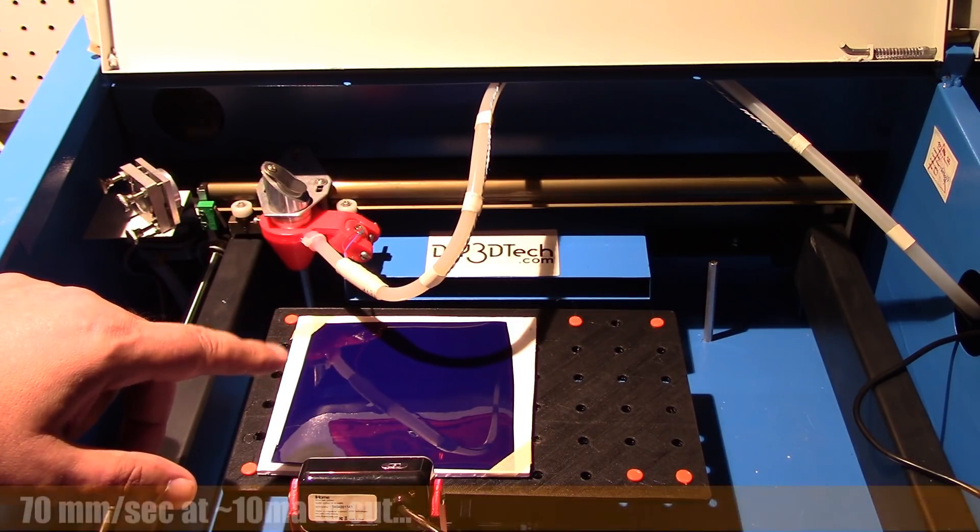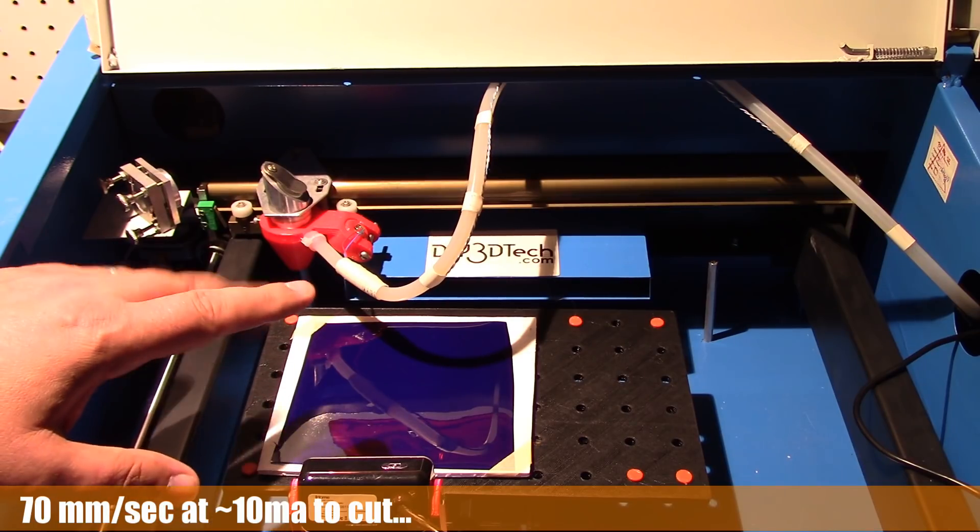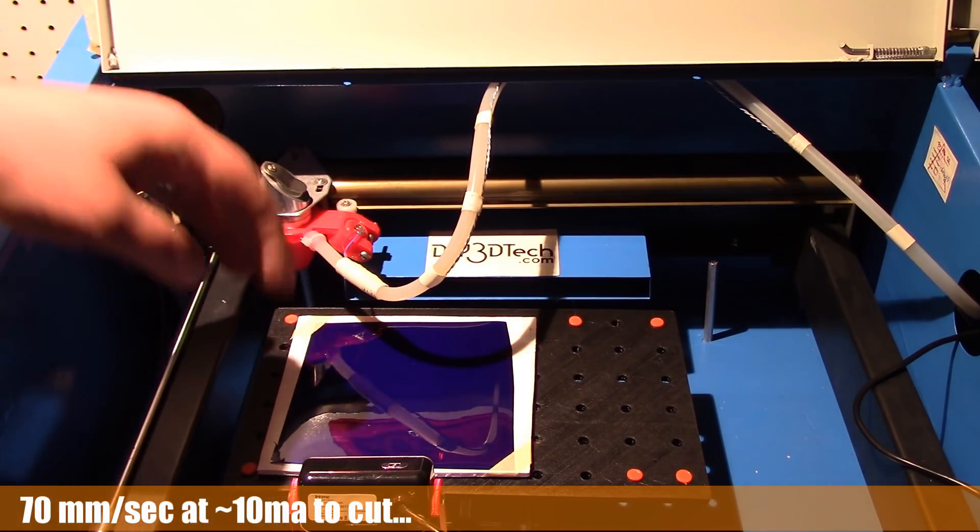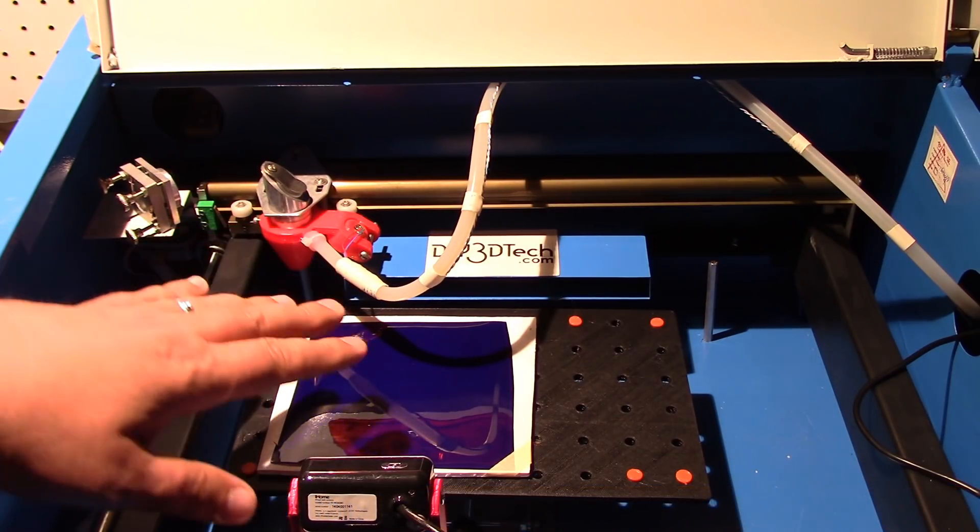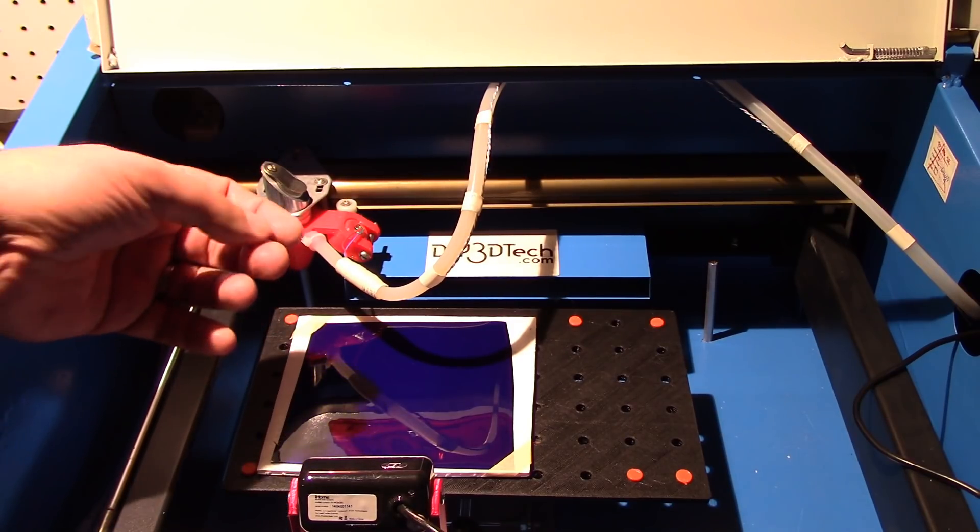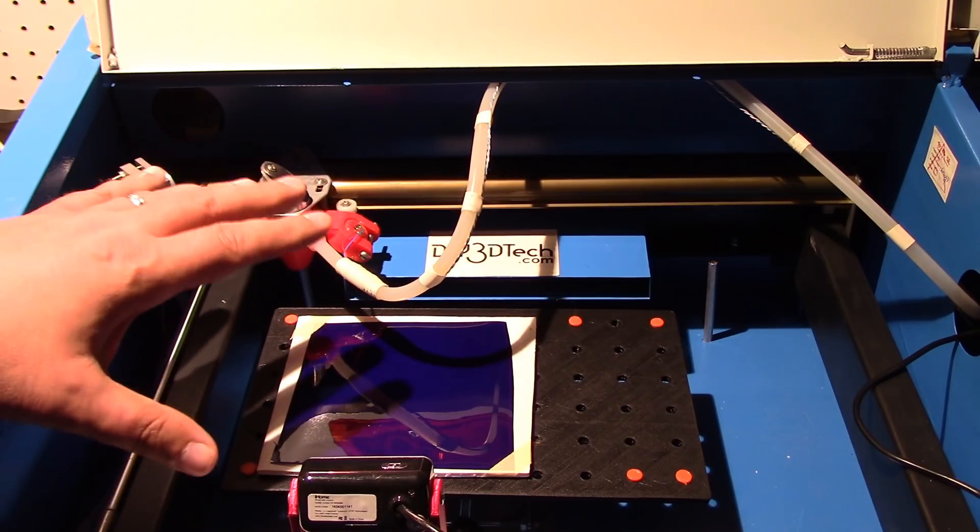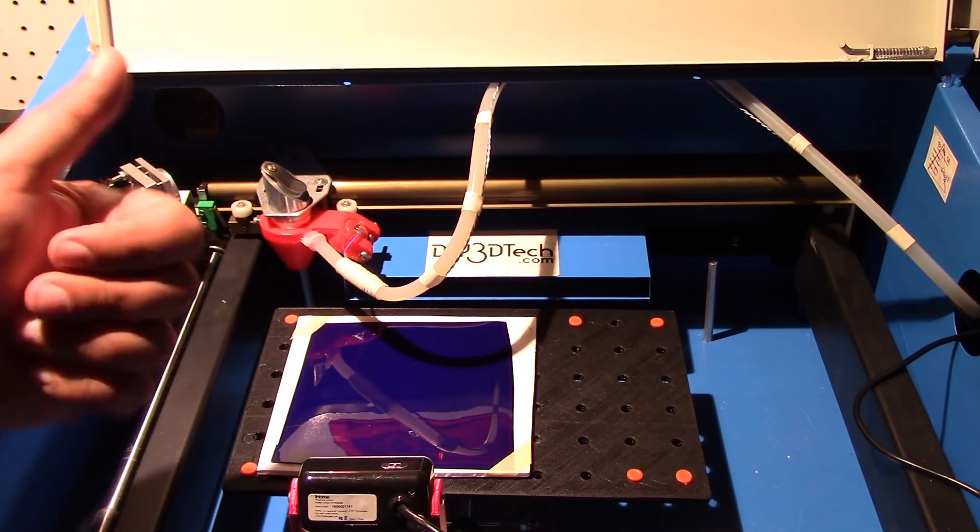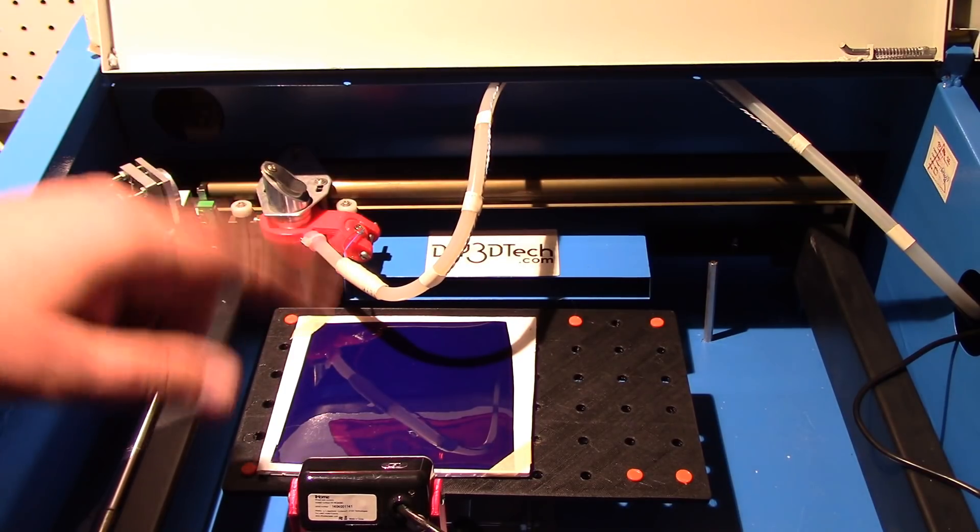I'm going to go about 70 millimeters a second and about 10 milliamps to cut this out. The idea is I want to keep this flat, so that's why it's attached. I also want to give it a surface to kind of center to, but I don't want to actually catch it on fire. So the key is: one, move fast; two, move low power, and we should be good.